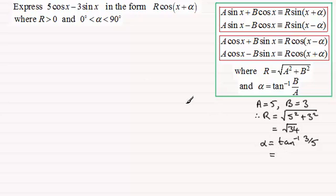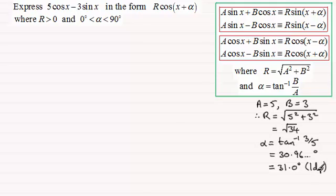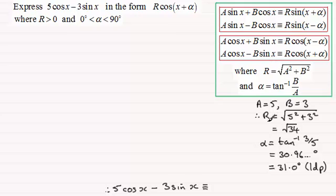Make sure your calculator is in degrees mode because we're working with degrees. You should find you get 30.96 and so on degrees, and rounding to one decimal place that would be 31.0 degrees. So in summary: 5·cos x minus 3·sin x is identical to r·cos(x + α), and we've worked out r is root 34, so it's identical to root 34 multiplied by cos(x + 31.0°).